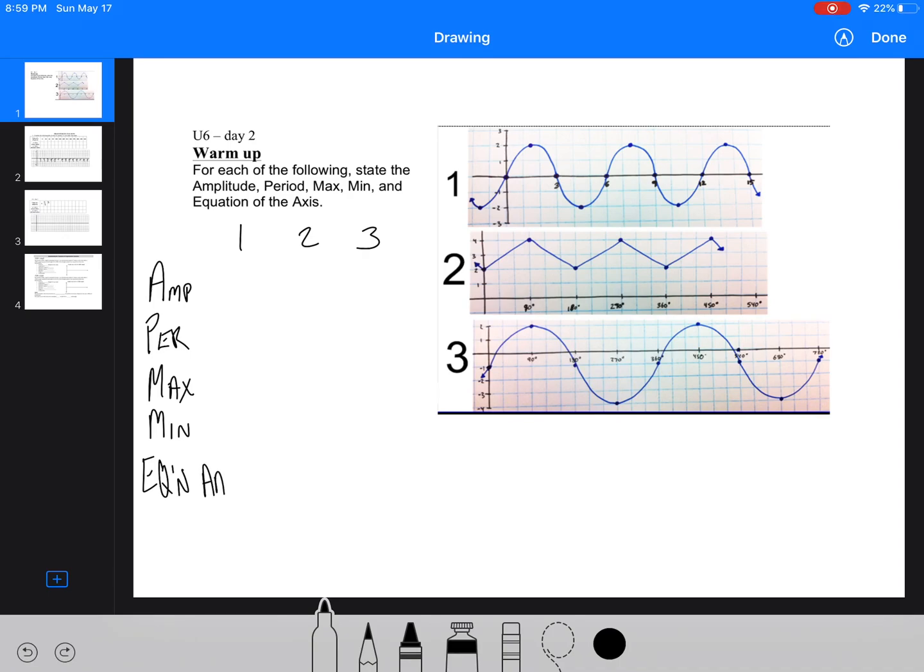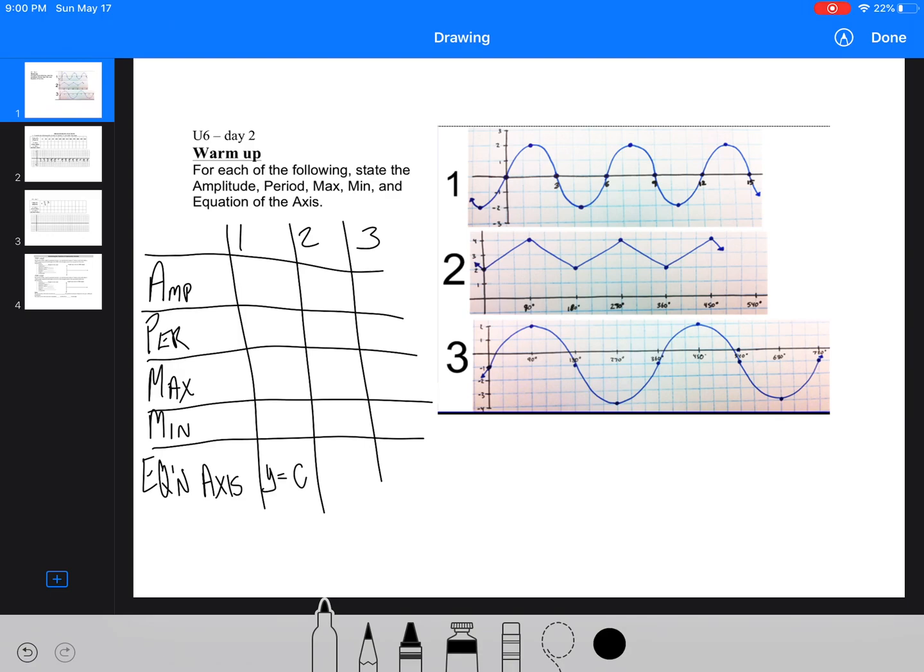and the equation of the axis for each. All right, so got a little crooked lines there, but that's okay. So first, I think it's actually easiest if we start at the bottom here.